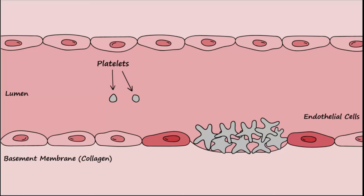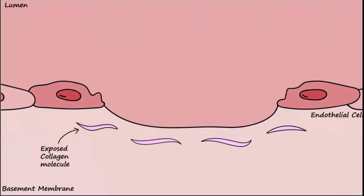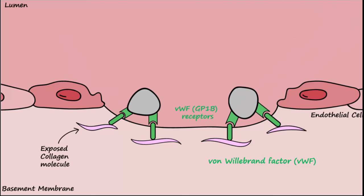Let's take a closer look at the individual steps by which platelets become activated. Platelet plug formation begins when a blood vessel suffers damage. A protein known as von Willebrand factor, abbreviated VWF, is secreted by endothelial cells and binds to exposed collagen in the vessel wall. Circulating platelets have VWF receptors, also known as GP1b receptors. VWF forms a bridge to connect the platelets to the collagen, and when the platelets bind to the VWF, the platelets become activated.